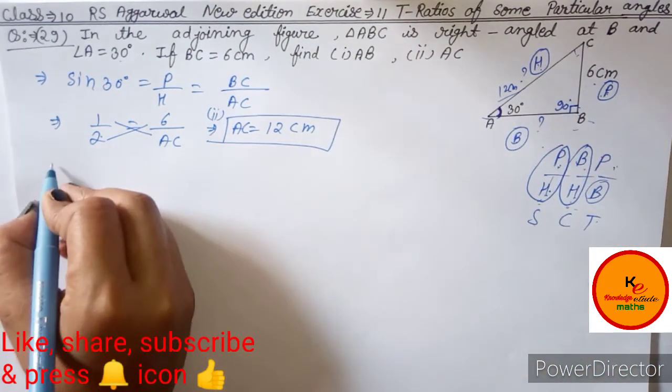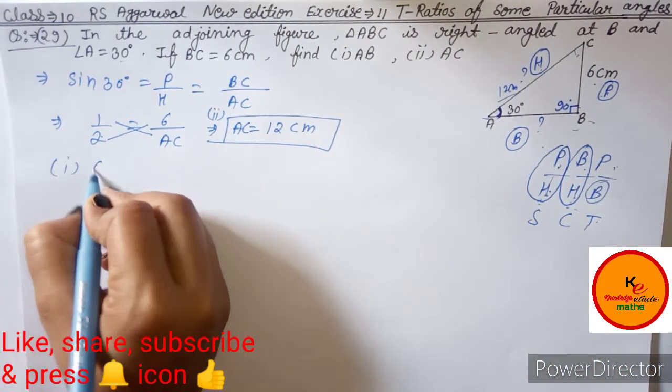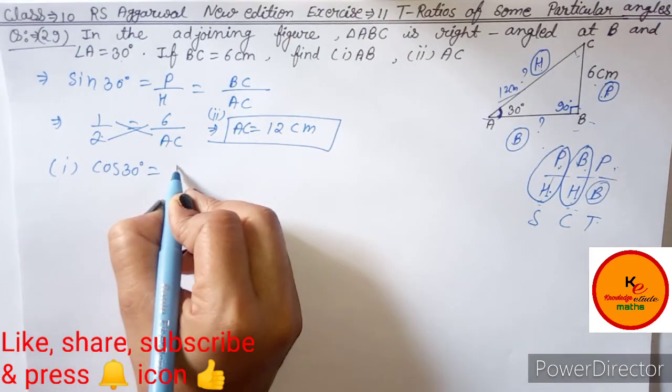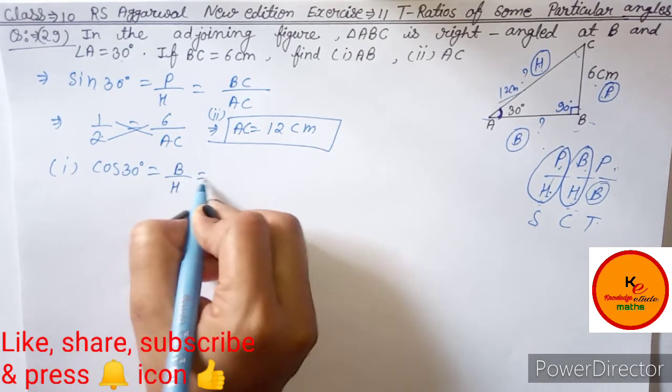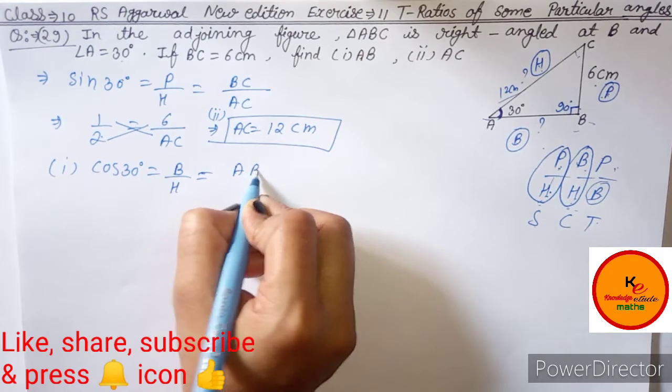For part 1, we take cos 30 degree is equal to base upon hypotenuse. Base is AB which we have to find, and hypotenuse is AC which is 12 cm.